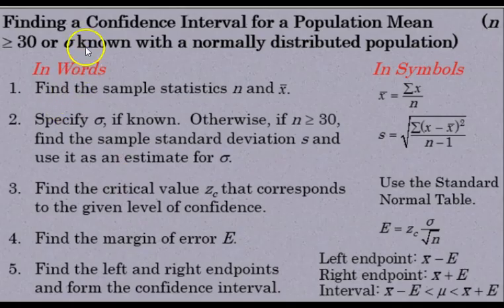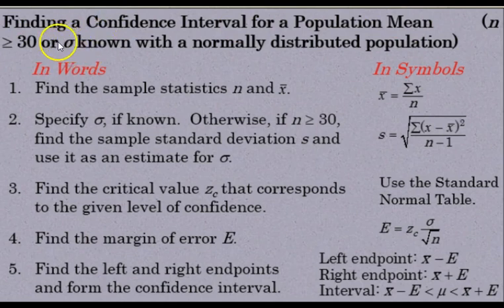To summarize, these are the steps involved in finding a confidence interval for a population mean where n is greater than or equal to 30, or the population standard deviation is known in a normally distributed population. First, find the sample statistics n and x bar. Second, specify the standard deviation if known; otherwise, if n is greater than 30, find the sample standard deviation and use it to estimate it. That's done with the formula: square root of the sum of square deviations over n minus 1 degrees of freedom.